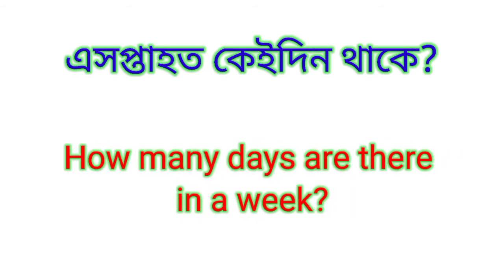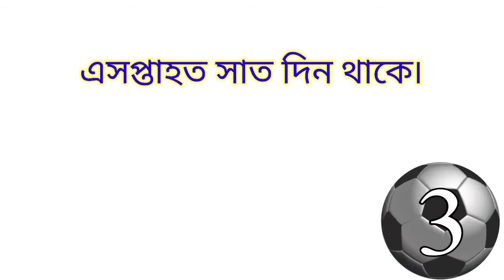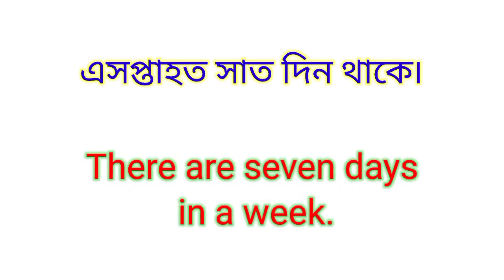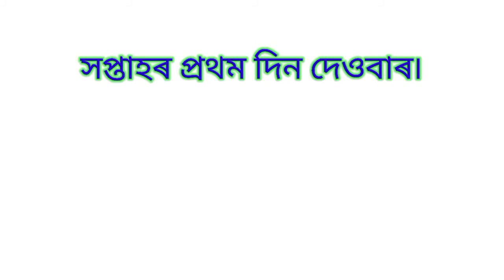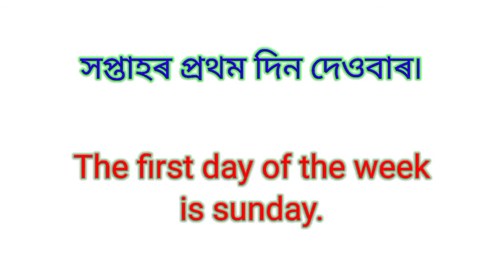How many days are there in a week? There are seven days in a week. The first day of the week is Sunday.